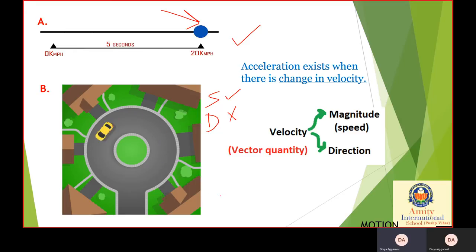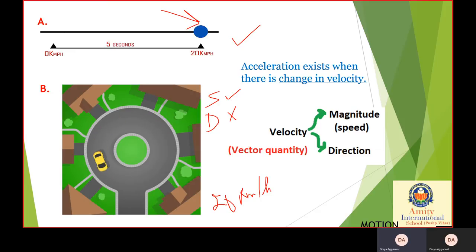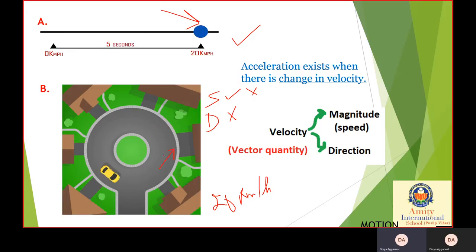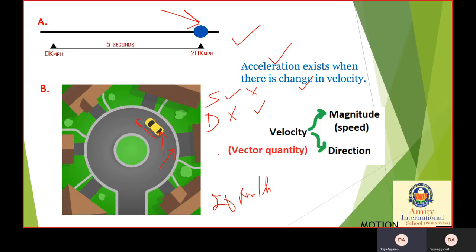Now let's look at another case where the car is running at a constant 20 km per hour, so the speed is constant and there is no change in speed. But the direction is changing — look, as the car moves, the direction of movement is changing. Since the direction is changing, the velocity changes, and this means there is acceleration.